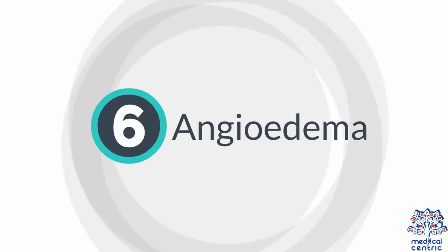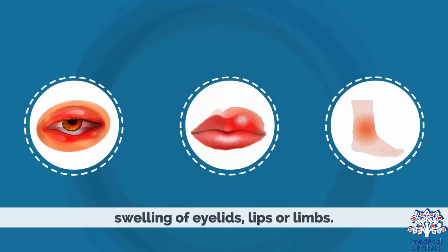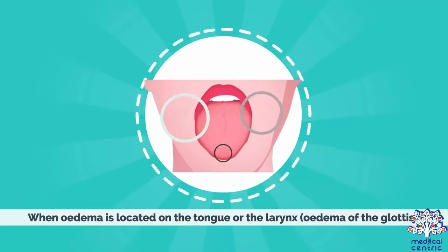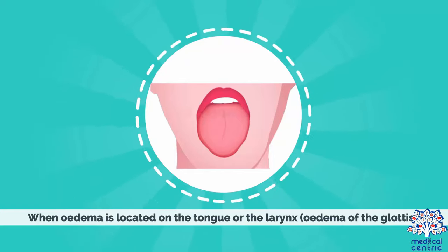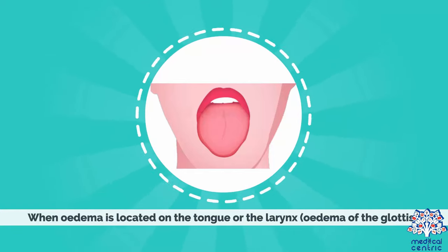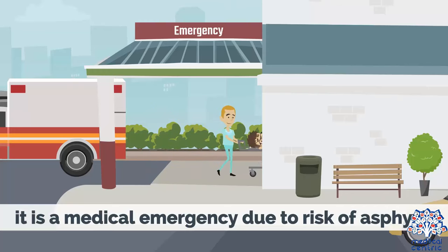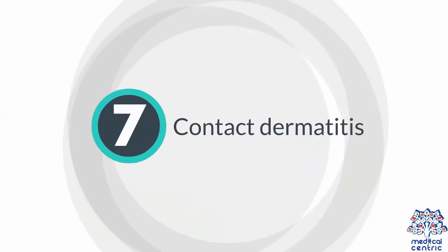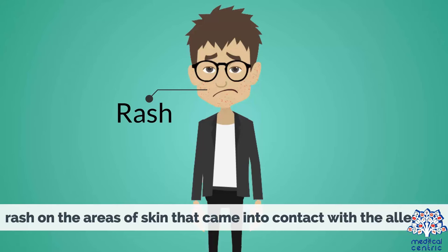Angioedema: swelling of eyelids, lips or limbs. When edema is located on the tongue or the larynx — edema of the glottis — it is a medical emergency due to risk of asphyxia. Contact dermatitis: rash on the areas of skin that came into contact with the allergen.